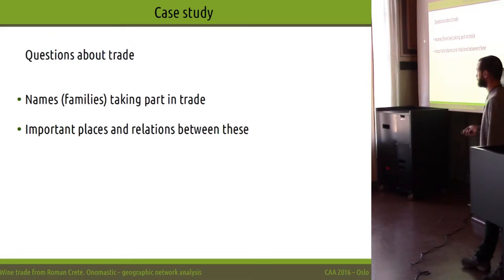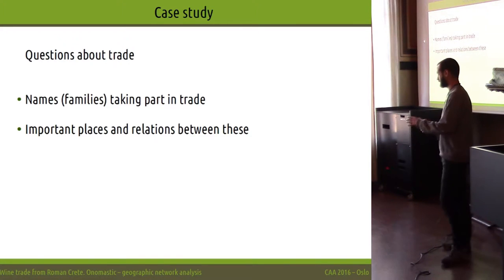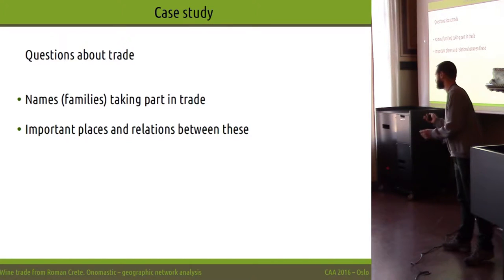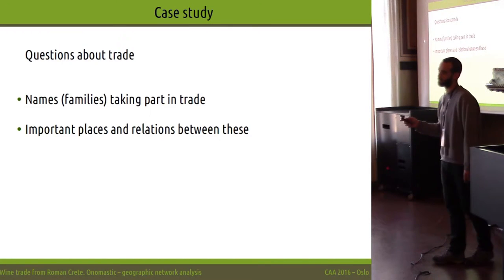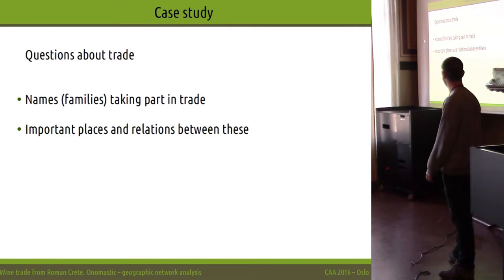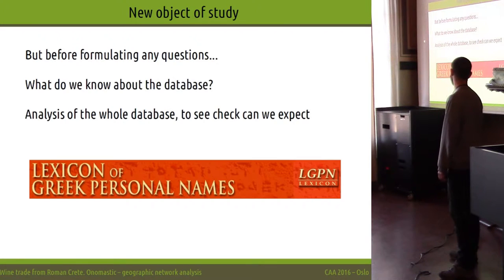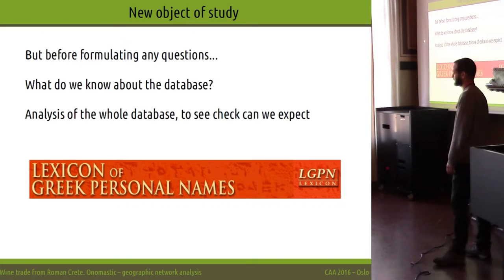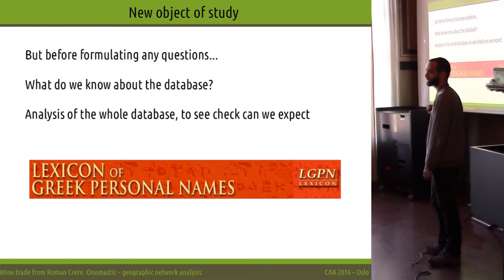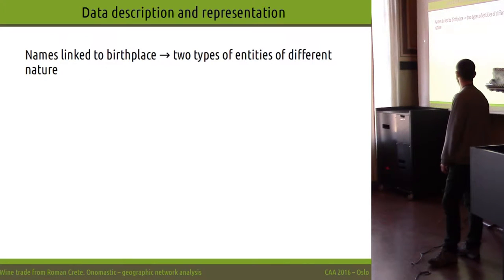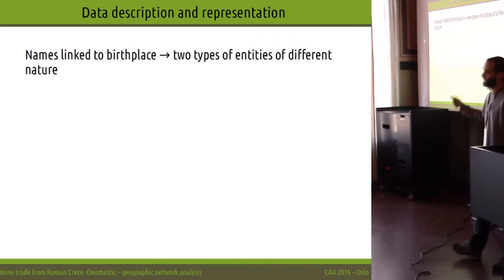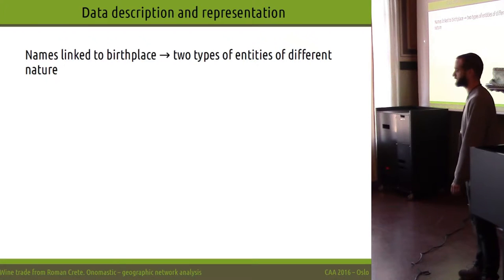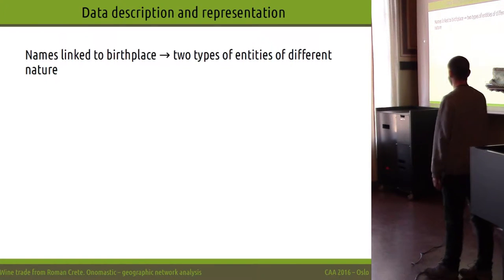You can make questions about the trade based on the amphorae found in Pompeii and this wine-related case study. But we thought that before doing that, we had to analyze the whole database to see what we could learn from it. This database is formed by names linked to their place of origin.